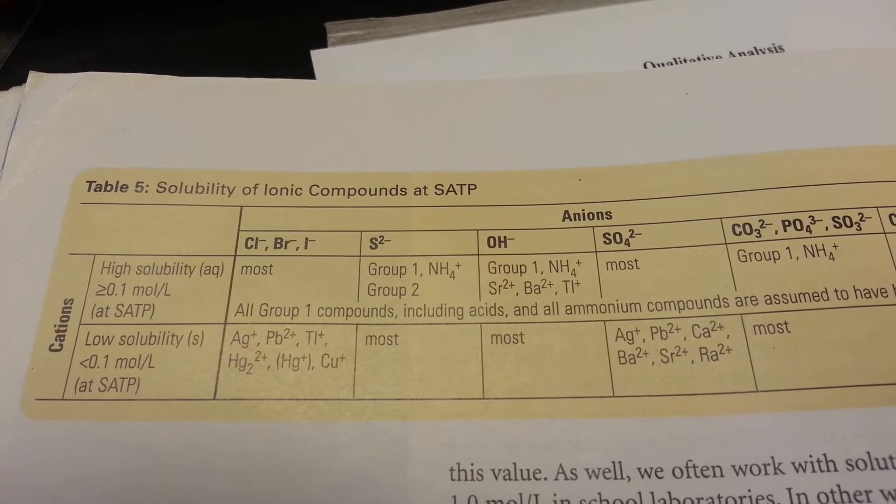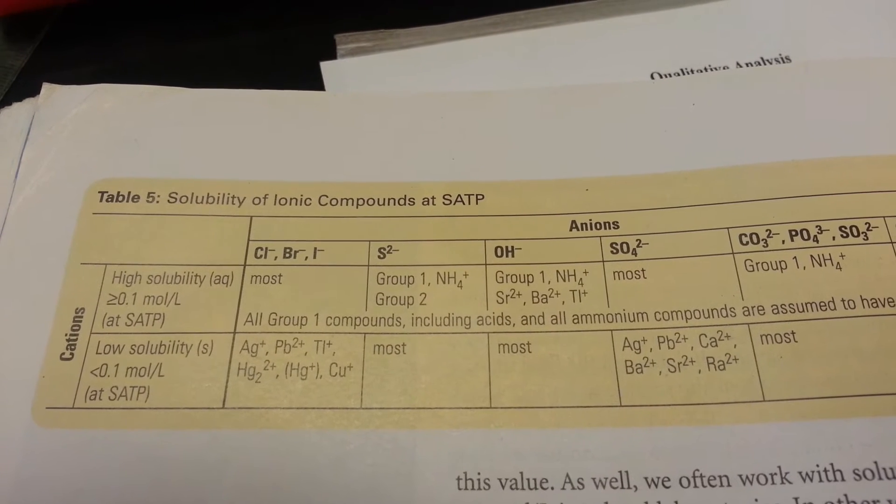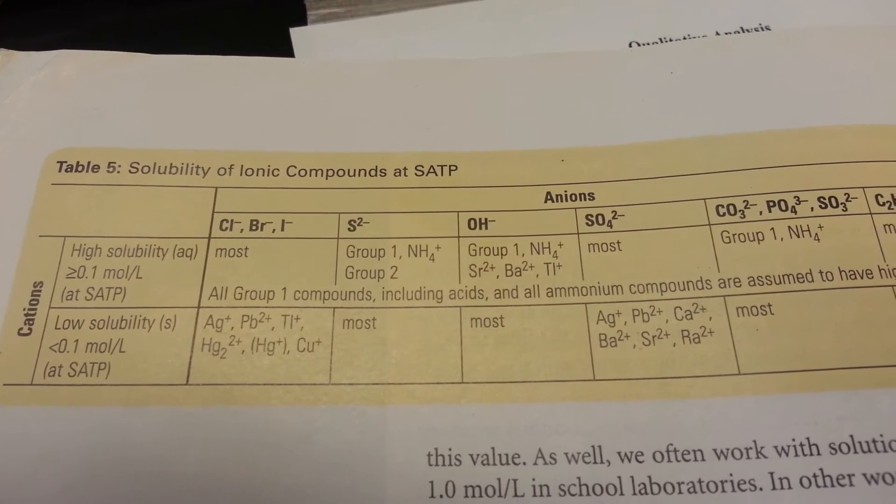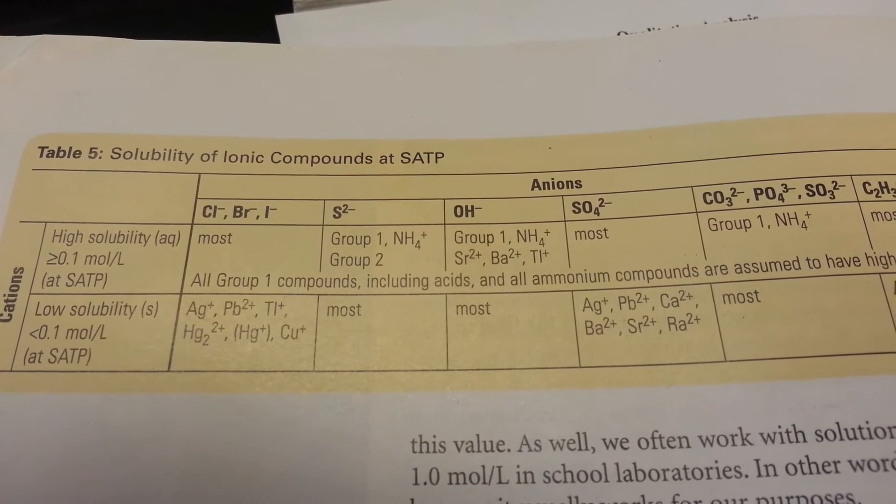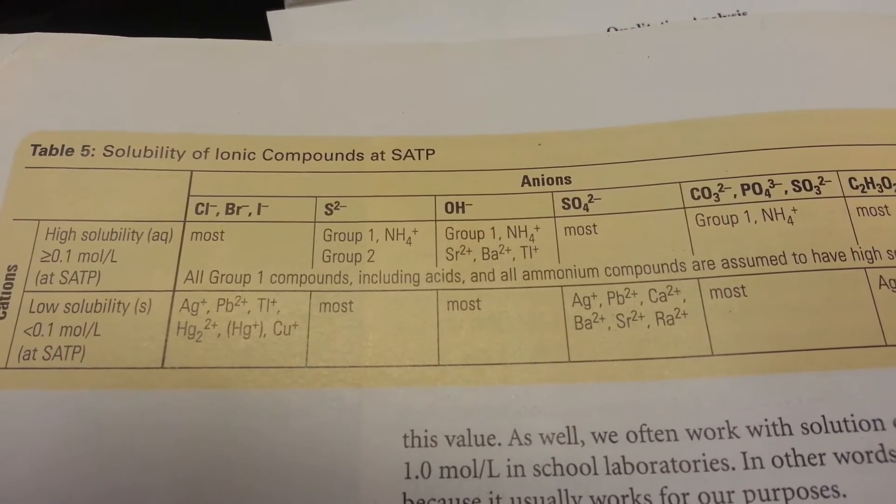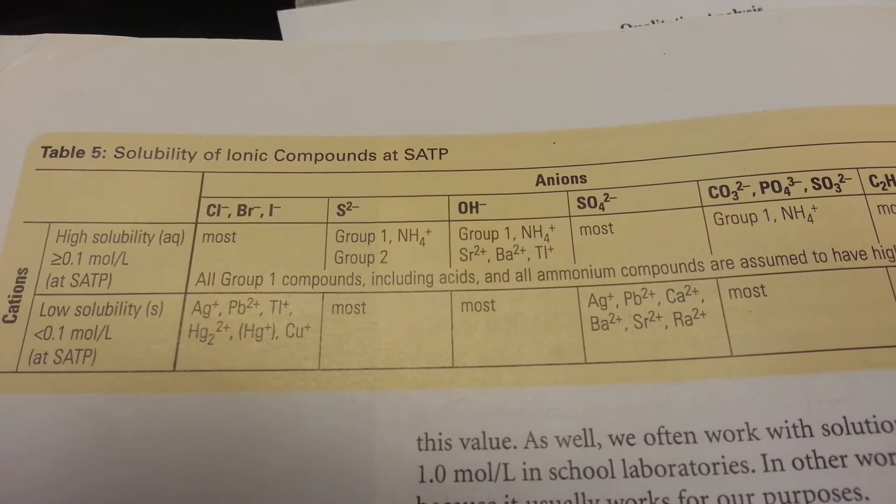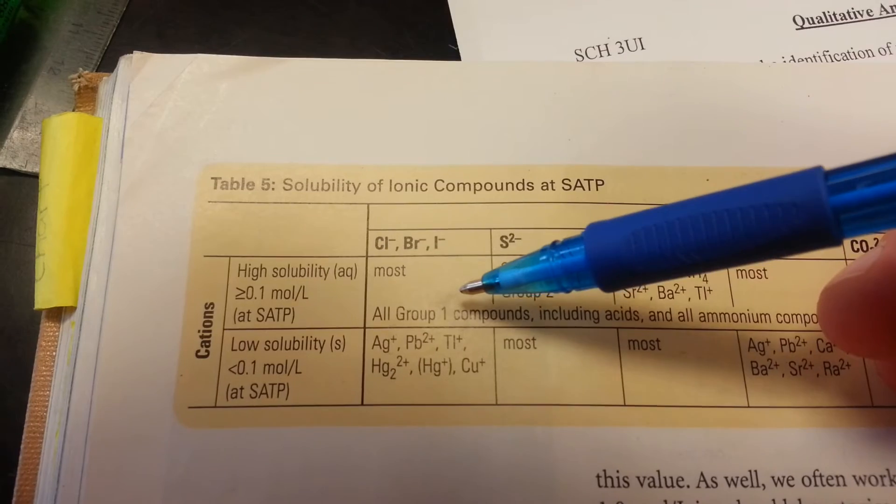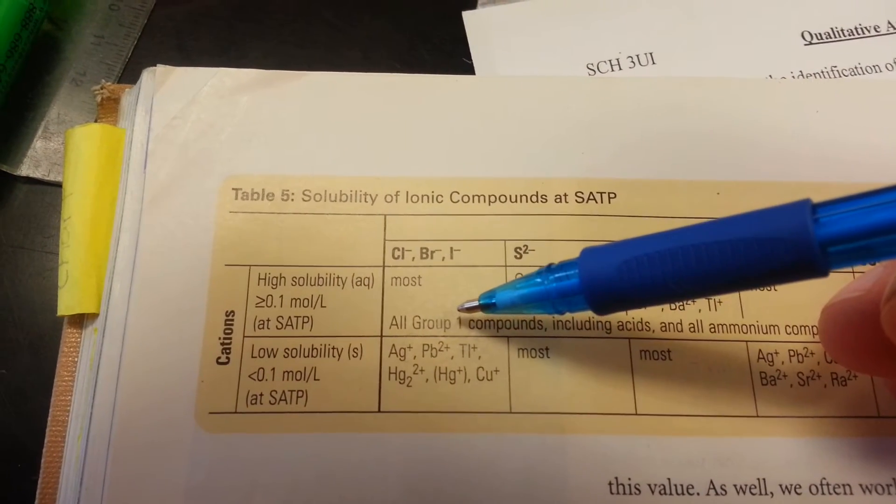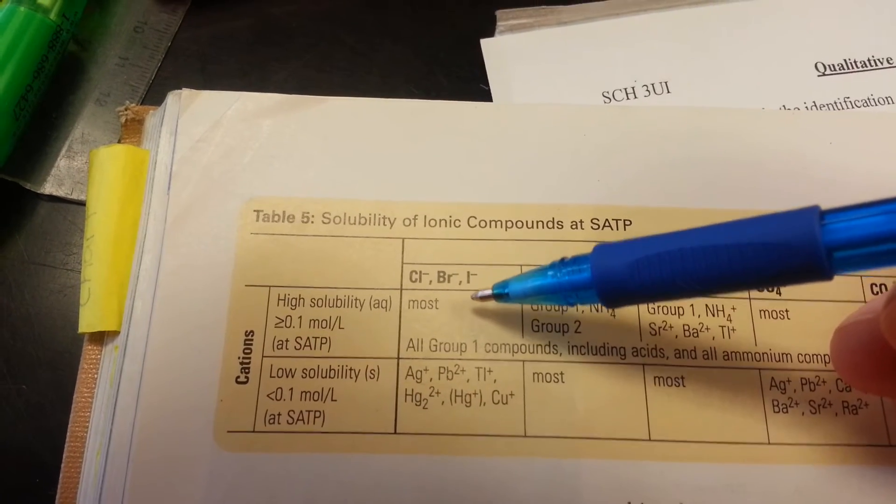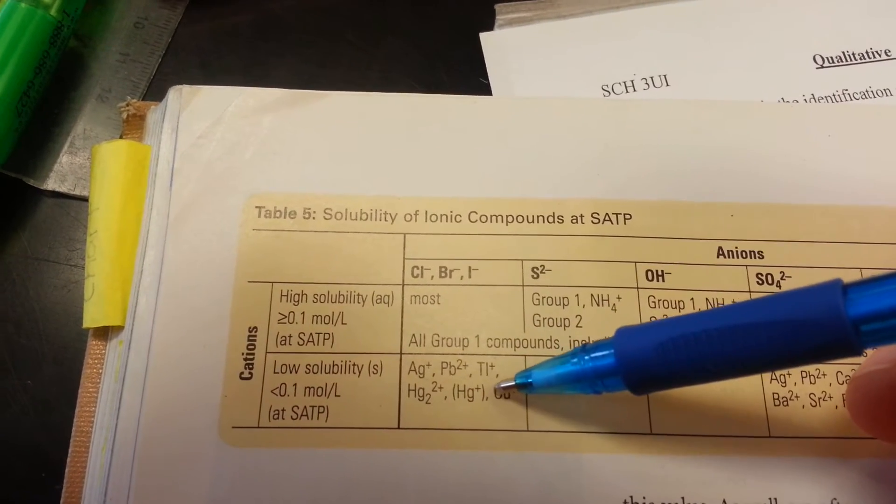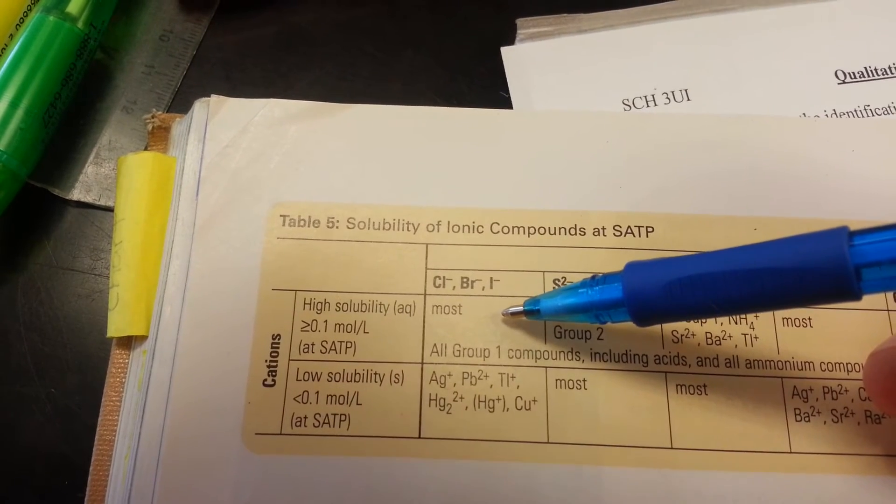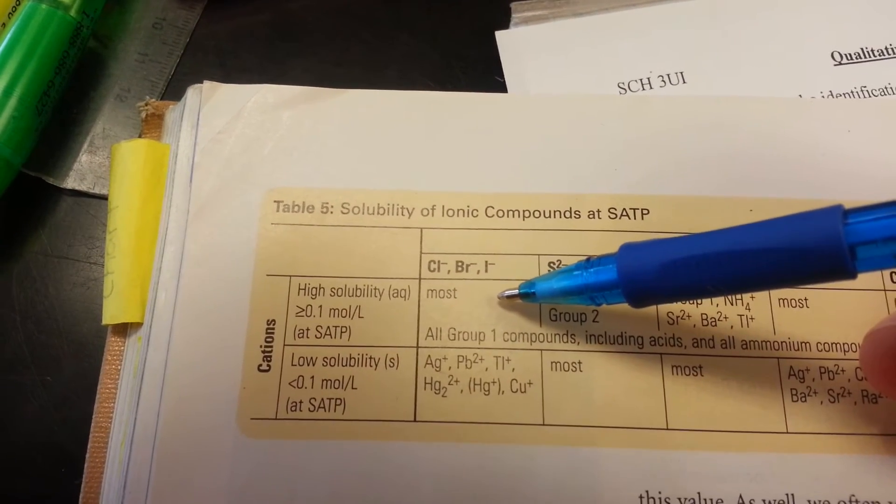So, we're looking for calcium, and we're trying to find substances that it will make precipitate or an insoluble compound with. Words such as most sometimes can be confusing for students. Most means most. The exceptions are in the ones above. So, when we look across the row, we're going to take a look at chlorine, bromine, and iodine. They group them together because they have similar insoluble properties. Most substances are going to have high solubility with these things. We look at the exceptions, and calcium is not listed. Thus, chlorine, bromine, and iodine will not create a precipitate. They will not be insoluble with calcium.